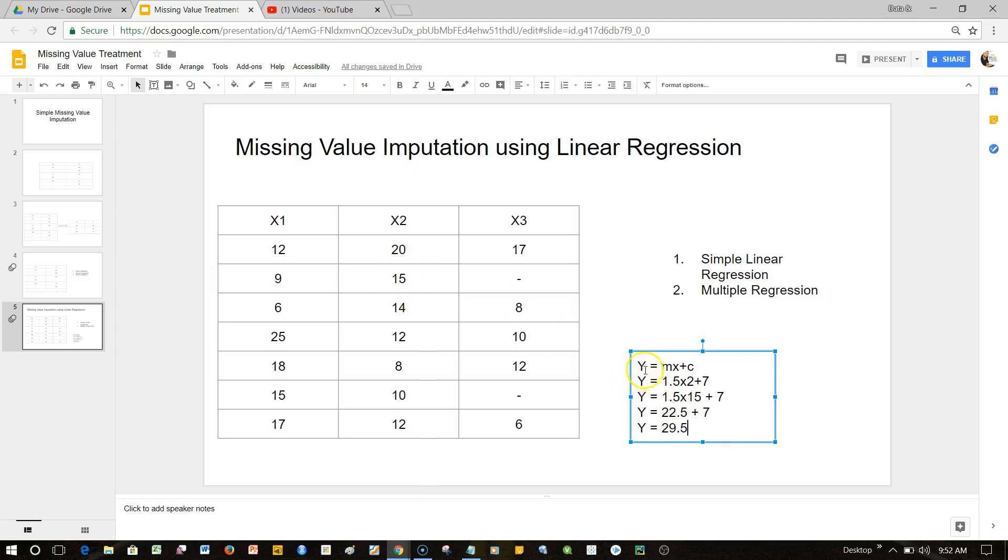22.5 plus 7, so y equals 29.5. It's just an example, not the clear representation of this because we haven't calculated correlation. I've just showed you that 29.5 will probably come here if this is what the equation is, and that's how you can do the missing value imputation.